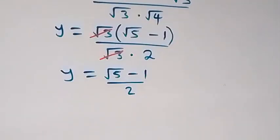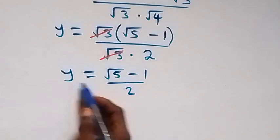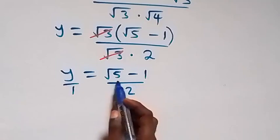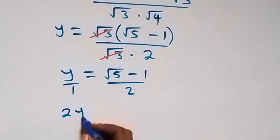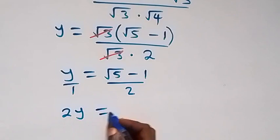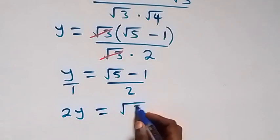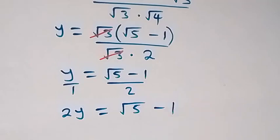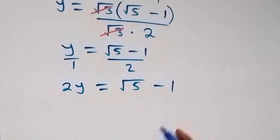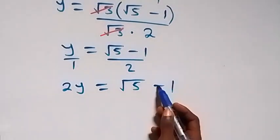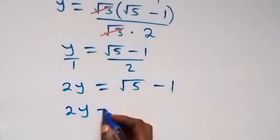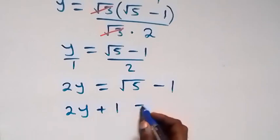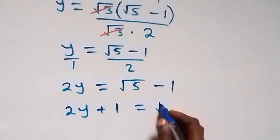Let's cross multiply. y multiplied by 2 equals √5 - 1, so we have 2y = √5 - 1. Taking minus 1 to the other side, it becomes plus, so we have 2y + 1 = √5.